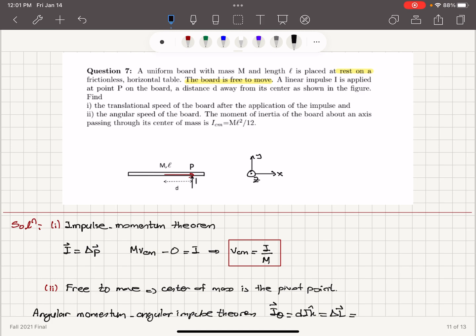For a rigid object, the angular momentum is given by I omega. Because we have a rotation with respect to the center of mass, it will be I center of mass times omega. Therefore, we will see that omega is equal to, because I center of mass was given to us as ML squared over 12, it will be 12 DI divided by capital M L squared.